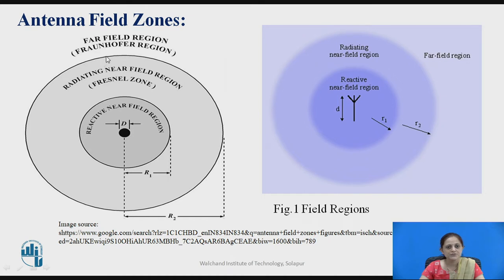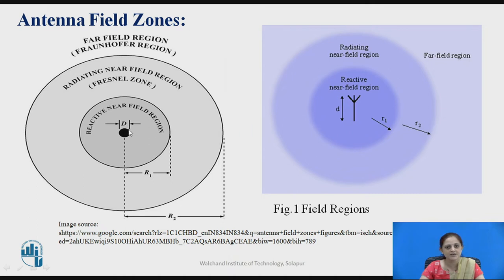These field regions are separated by boundaries which are only approximations. This figure shows the different boundaries with respect to the different field regions. The first field region is the near field region, next is the radiating near field region, and after that the far field region, separated by boundaries defined with R1 and R2. The antenna is placed at the center with maximum dimension denoted as small d or capital D.